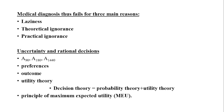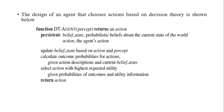This is called the principle of Maximum Expected Utility, in short MEU. The design of an agent that chooses actions based on decision theory is shown below. The function is named DTAgent — that is, decision theory agent. It takes percept as argument and returns an action. Persistent variables include the agent's current belief state — probabilistic beliefs about the current state of the world — and the agent's action. It updates the belief state based on the action and percept, calculates outcome probabilities for each action given action descriptions and current belief state, then selects the action with the highest expected utility given the probabilities of outcomes and utility information, and finally returns the best action.